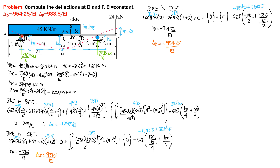The moment at B is equal to negative 45 times 1 times 0.5, so it is negative 22.5 kilonewton meter. The moment at point E is negative 24 times 2, so negative 48 kilonewton meter. The vertical reaction at D is 3369 over 16. These reactions have been determined in the preceding problem, but you can verify by summing moments about E to solve for the vertical reaction at B, which is 3369 over 16.